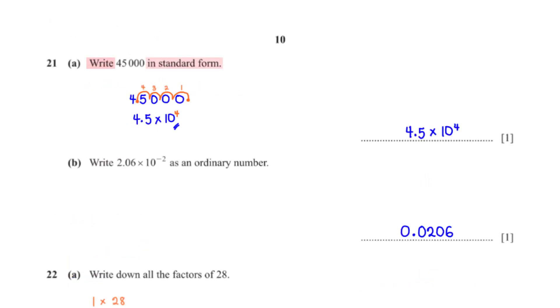Write 45,000 in standard form. To write this number in standard form, we move the decimal point from the end of the number to a position after the first non-zero digit, which is 4. So we have 4.5. Since we moved the decimal point 4 units to the left, we multiply 4.5 by 10 raised to the power 4.